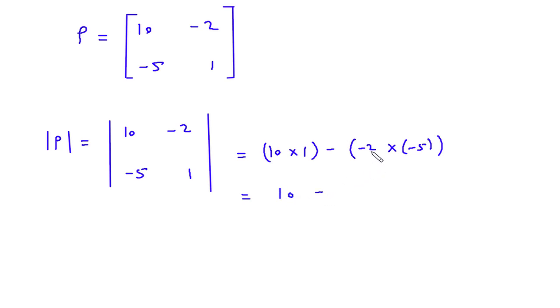Then minus, minus 2 into minus 5 will be plus 10, so this will be 10 and this will be equal to 0.